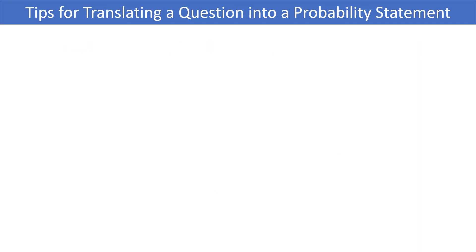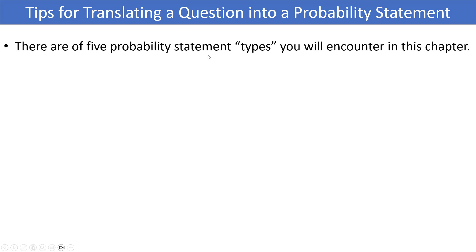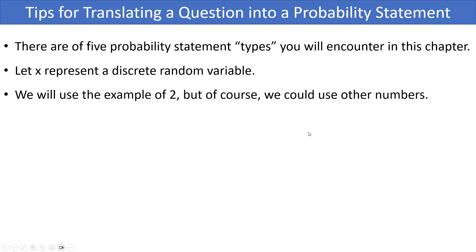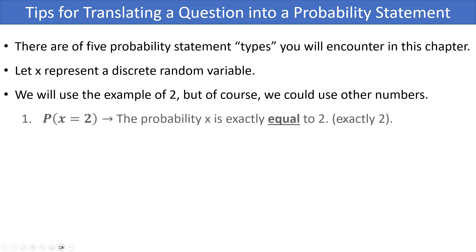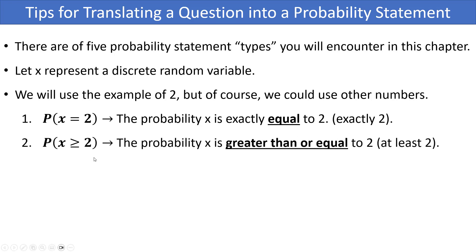It's extremely important to be able to translate a question into a probability statement. There are five common probability statement types for a discrete variable X — we'll use the number 2 as our example. First, you could be asked for the probability that X is exactly equal to 2: P(X = 2). Second, you could be asked for the probability that X is greater than or equal to 2 — described as 'at least 2' — which includes 2 and any larger values.